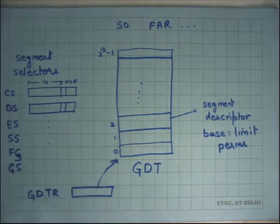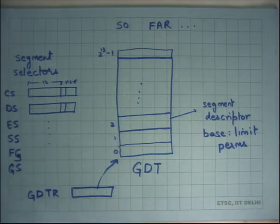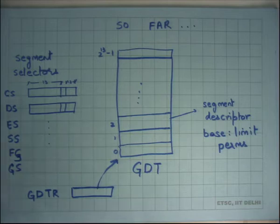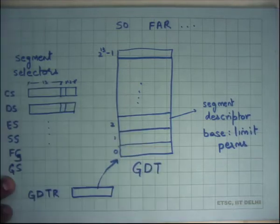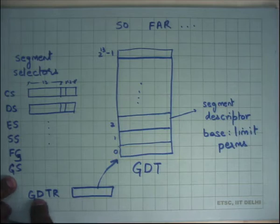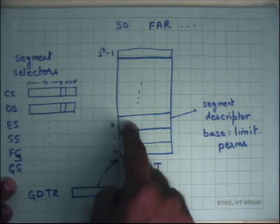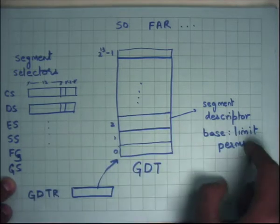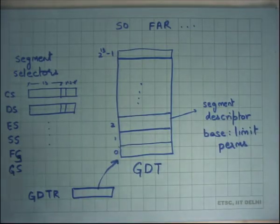If you are dereferencing the stack through ESP or EBP registers, the default segment will be the SS register. You can also override the default segments by explicitly specifying the segment register you want to use. The segment selector is used to index into the GDT. The hardware first reads GDTR to find the address of GDT, adds the selector to find the descriptor, reads the base and limit values, and computes PA = VA + base, checking if VA is less than the limit. If these checks succeed, it uses the computed physical address to index physical memory.